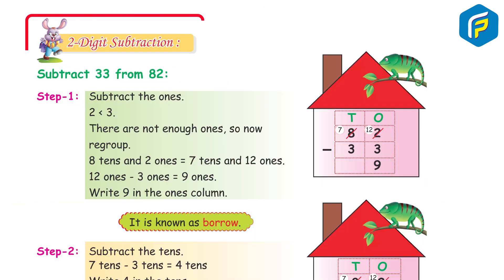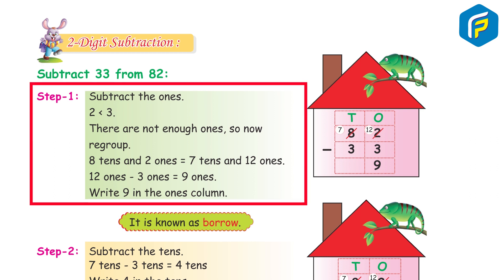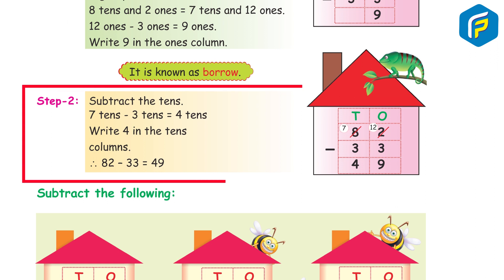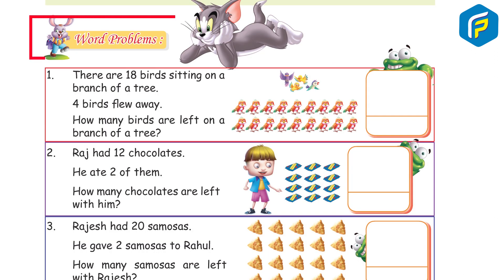Two-digit subtraction: Subtract 33 from 82. Step 1 – Subtract the ones: 2 is smaller than 3, so regroup. 8 tens and 2 ones equals 7 tens and 12 ones. 12 ones minus 3 ones equals 9 ones. Write 9 in the ones column. This is known as borrowing. Step 2 – Subtract the tens: 7 tens minus 3 tens equals 4 tens. Write 4 in the tens column. 82 minus 33 is equal to 49.